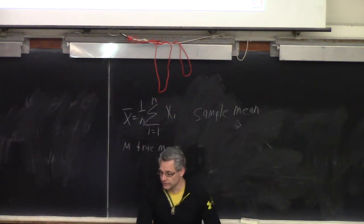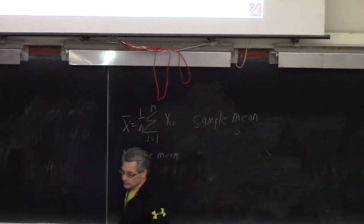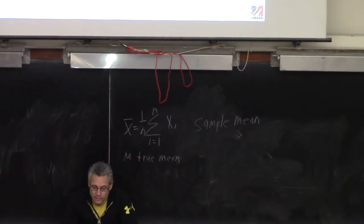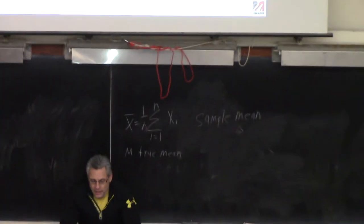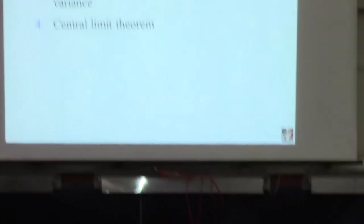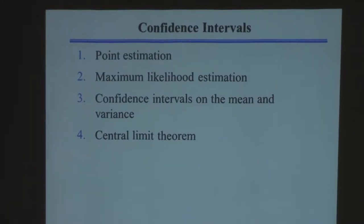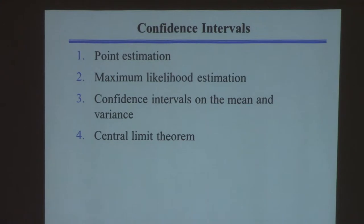I'm going to talk about two kinds of estimation. One is what we typically do — that's called point estimation. Then I'm going to talk about something called maximum likelihood estimation. We're not going to use it a lot in the class, but it's a very common tool people use in statistics, so you'll often hear the term maximum likelihood. The main focus will be on calculating the confidence interval on both our estimate of the mean and our estimate of the variance or standard deviation.